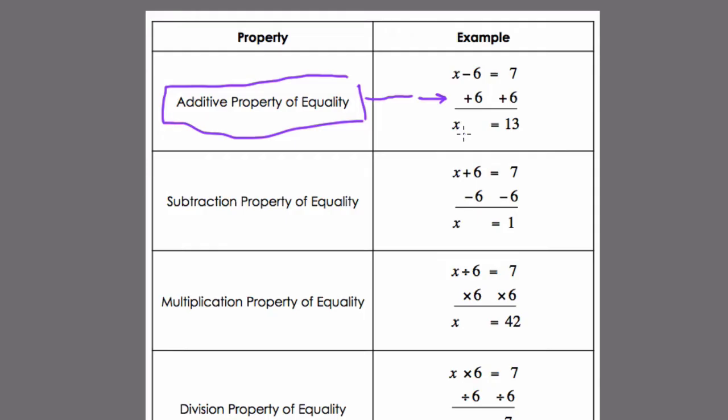The subtraction property of equality works in the same way. Instead of adding now, we're subtracting to both sides. If x plus 6 is 7, then if we take 6 away from both sides, we know that our equation is still balanced, and then we can solve for x. We can see that x is 1.